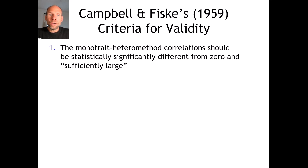The first criterion Campbell and Fisk proposed is that the mono-trait heteromethod correlations should be statistically significantly different from zero and sufficiently large. The mono-trait heteromethod correlations relate to convergent validity because they are correlations between variables that represent the same trait but measured by different methods, so those correlations should be high and strong to indicate convergence between different methods for the same trait.